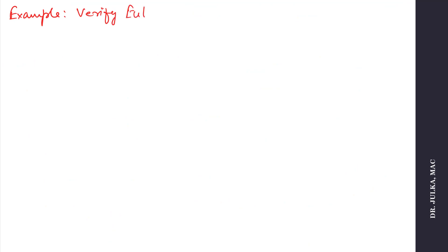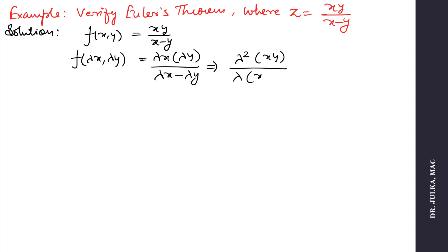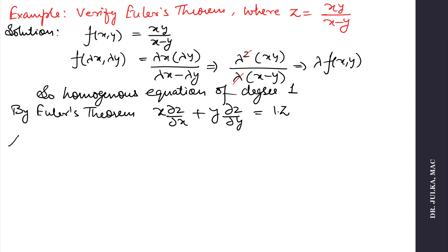Next example: verify Euler's theorem where z equals xy divided by (x − y). It is a function of x and y: xy/(x − y). Replace x by λx and y by λy, and after solving we get λ times f(x, y). So it is a homogeneous equation of degree 1. By Euler's theorem, x·(∂z/∂x) + y·(∂z/∂y) equals 1·z.